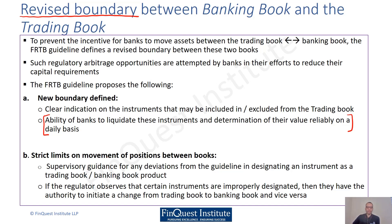If a regulator, during its review of a bank, observes that certain instruments are improperly designated — for example, an instrument that should be in the banking book has gone to the trading book or vice versa — they have full authority to instruct the bank to initiate a change between these books as it deems fit.